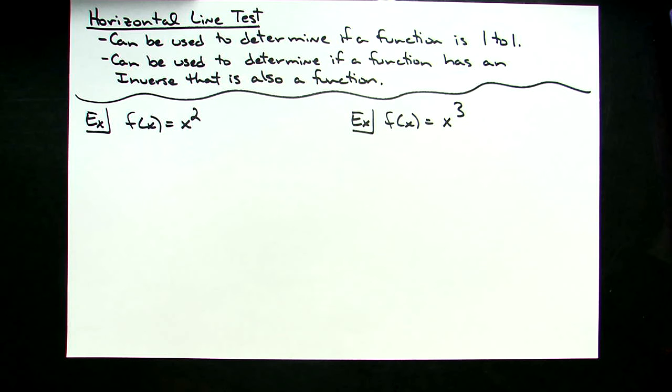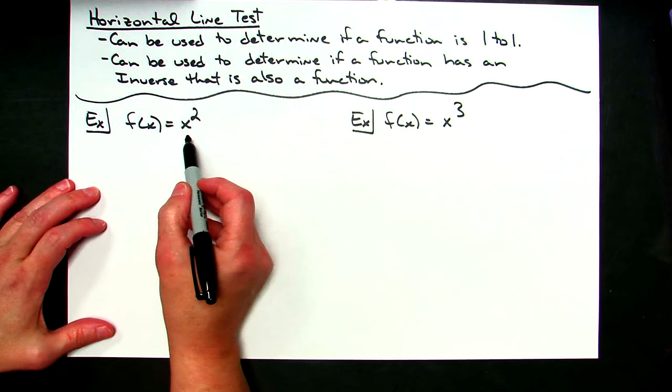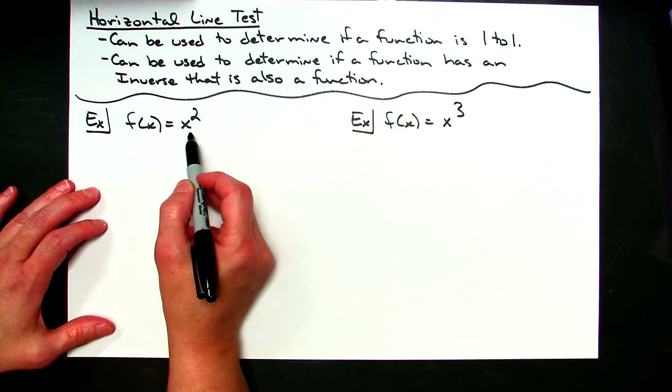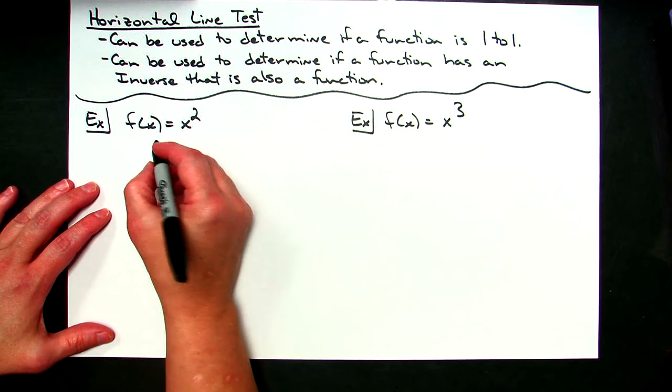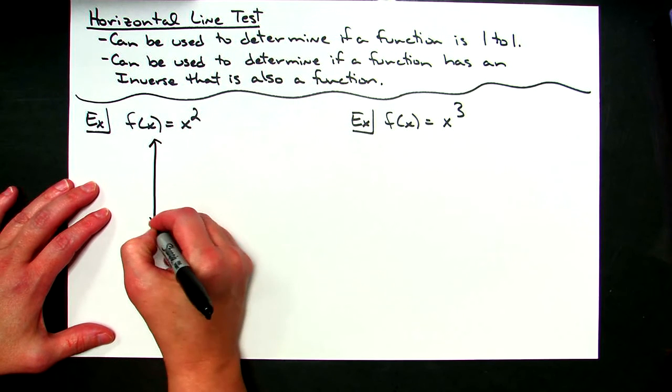It can also be used to determine if a function has an inverse that is also a function. So I've got two examples set up here. My first one, f of x equals x squared. I chose this one, the standard parabola, upright, no shifting, the vertex is going to be at 0, 0, so that we can easily sketch this and see what it looks like.